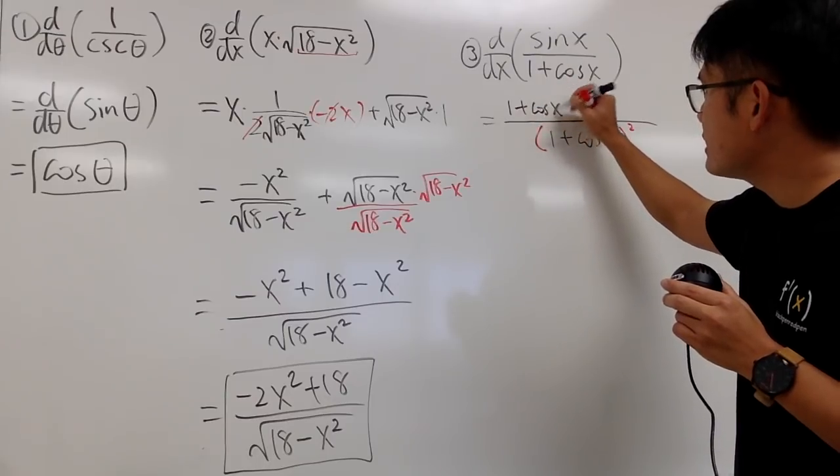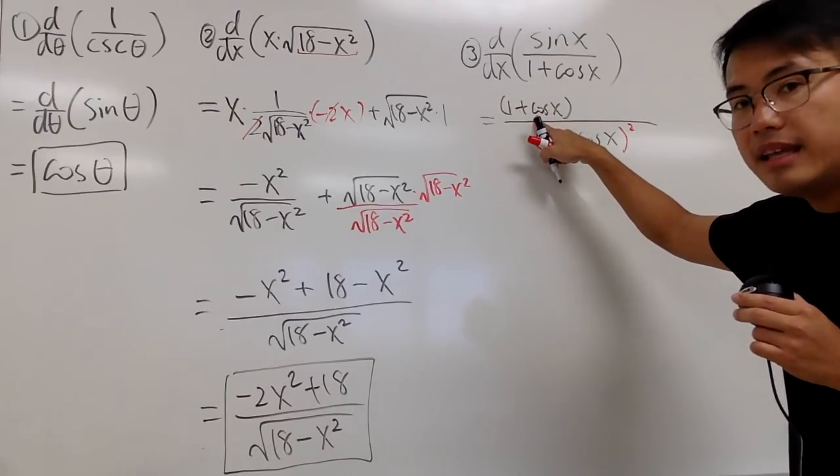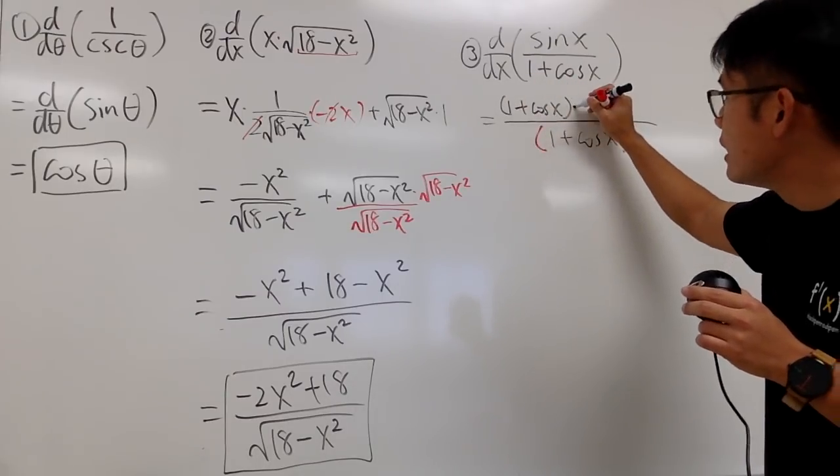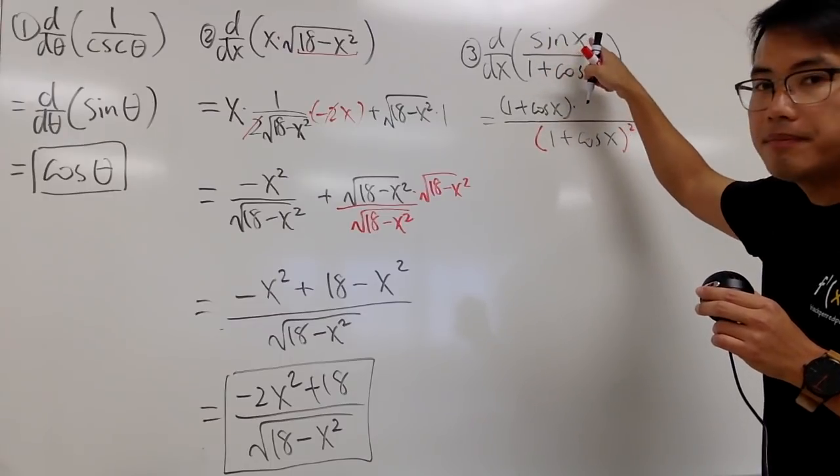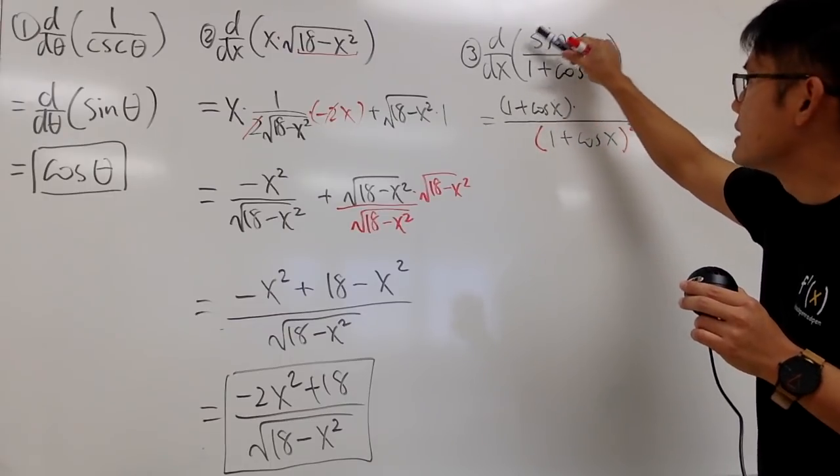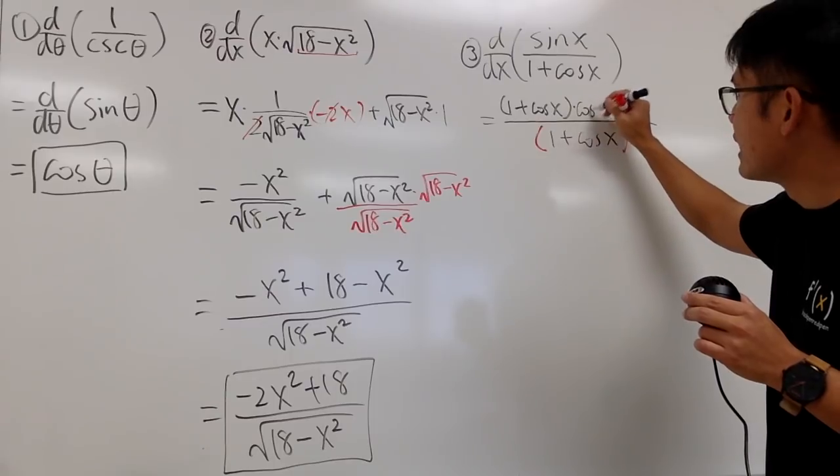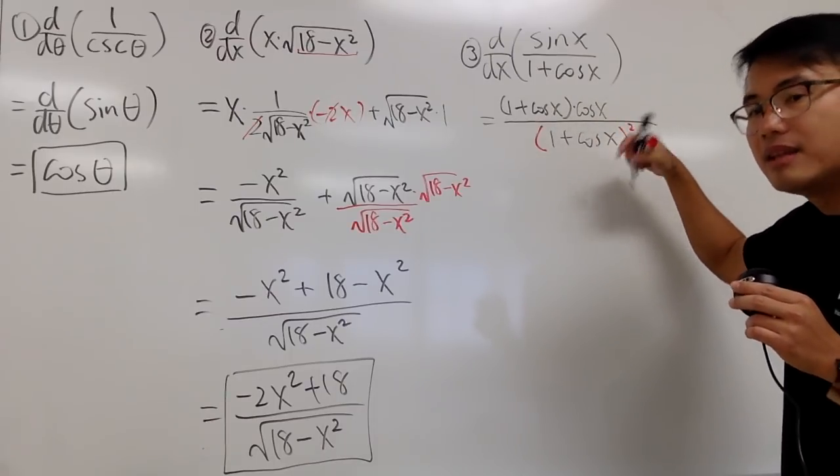And then, for the top, I'm going to put down the bottom function, namely, 1 plus cosine x. And, then, I will have to multiply by the derivative of the top function. Derivative of sine x is cosine x. And,